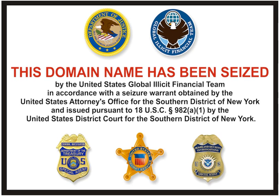Below the top-level domains in the domain name hierarchy are the second-level domain names. These are the names directly to the left of .com, .net, and the other top-level domains. As an example, in the domain example.co.uk, co is the second-level domain.